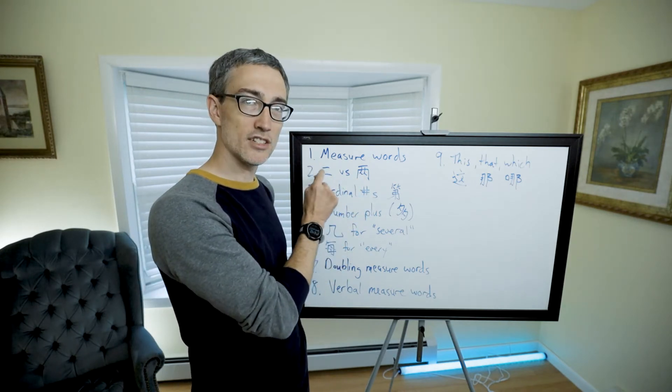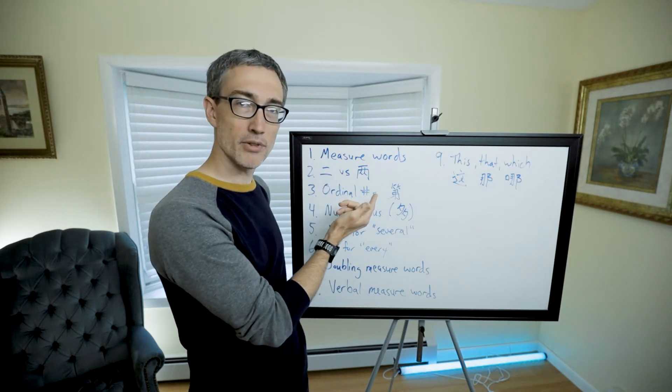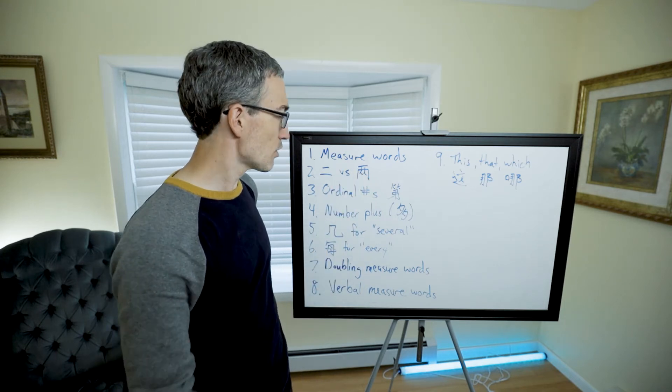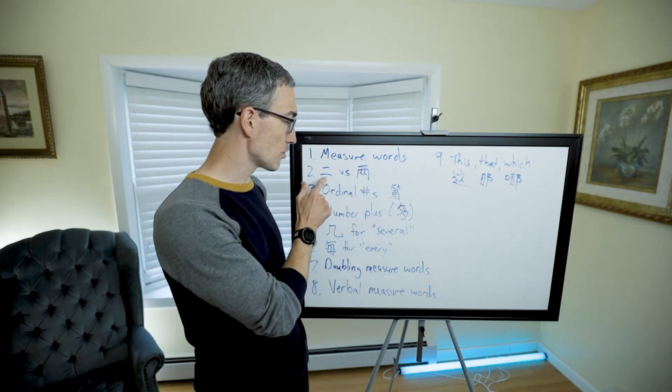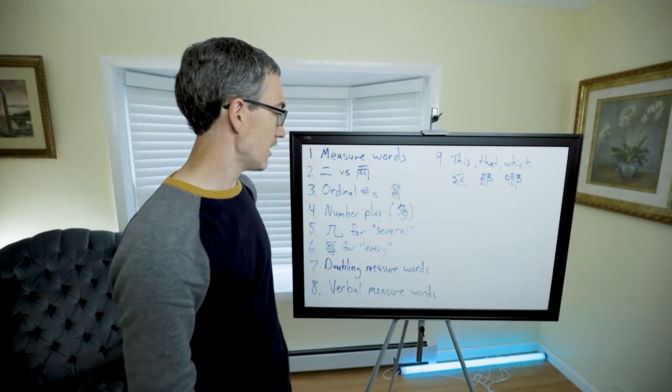Then we talked about 二 (èr) versus 两 (liǎng). Basically, 二 (èr) refers to the digit two, the number two. But when you're counting something with a measure word, you use 两 (liǎng).